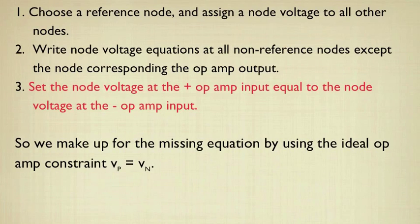This, of course, leaves us one equation short. But if we apply ideal op-amp element constraints, specifically the fact that V sub P equals V sub N, the positive input node voltage equals the negative input node voltage, then whatever node voltages we've applied to those plus and minus op-amp inputs can be set equal to each other. That makes up for our missing equation.